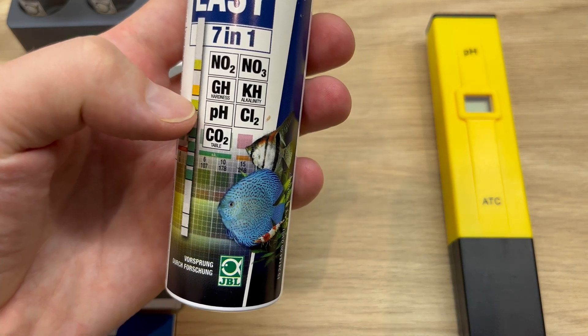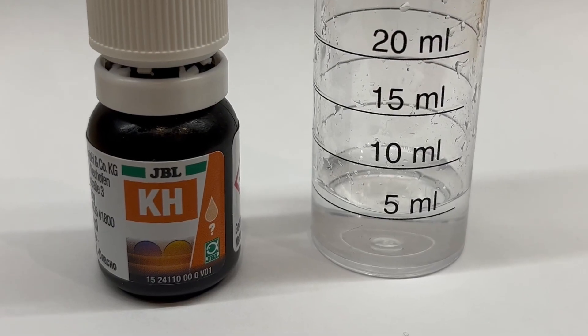So those stripes are good to check if the KH is really out of range and nothing more. So if you're worried, I would go with drop tests.